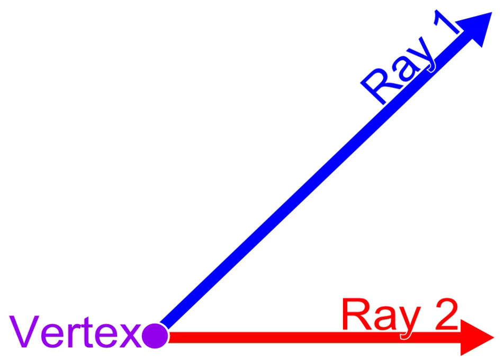Eudemus of Rhodes attributed the proof to Thales of Miletus. The proposition showed that since both of a pair of vertical angles are supplementary to both of the adjacent angles, the vertical angles are equal in measure. According to a historical note, when Thales visited Egypt, he observed that whenever the Egyptians drew two intersecting lines, they would measure the vertical angles to make sure that they were equal. Thales concluded that one could prove all vertical angles are equal if one accepted some general notions: all straight angles are equal, equals added to equals are equal, and equals subtracted from equals are equal.